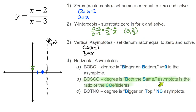So that horizontal asymptote is going to be the ratio of the coefficients. So I have a coefficient of one and a coefficient of one. Well, one over one equals one. That means we have a horizontal asymptote right here.